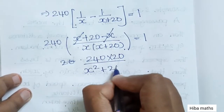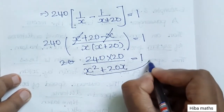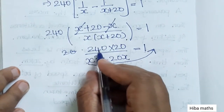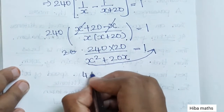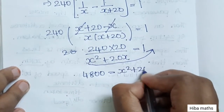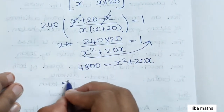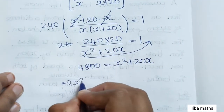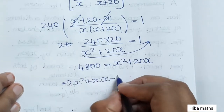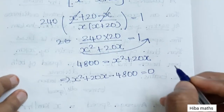After cross multiplication: 240 times 20x equals x squared plus 20x. That gives us 240 times 20, which is 4800, equal to x squared plus 20x. So the quadratic equation is: x squared plus 20x minus 4800 equals 0.